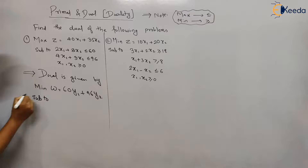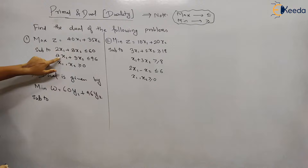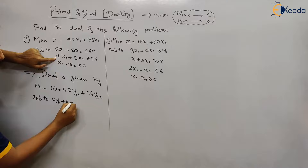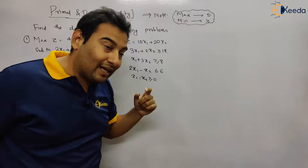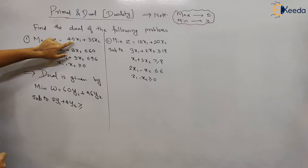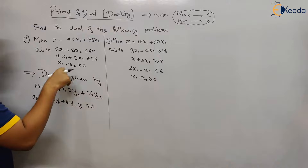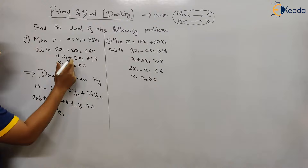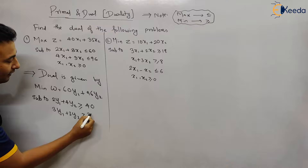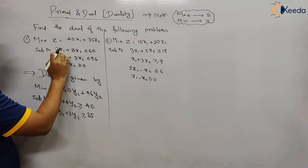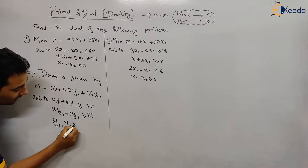Subject to: the constraints will be formed based on the coefficient of x1. Here we have 2, so that is 2y1; here we have 4, so that is 4y2. Since it is minimized, all constraints should be greater than or equal to. So: 2y1 + 4y2 ≥ 40, where 40 is the coefficient of x1 in the objective function. The second constraint will use the coefficient of x2: 3y1 + 3y2 ≥ 35. There are only two constraints — two coefficients for two variables x1 and x2 — so we get two constraints. Finally, y1, y2 ≥ 0 by default.